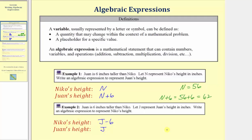As an example, let's let j, Juan's height, be equal to sixty inches, so j would be equal to sixty. Notice that j minus six, which represents Nico's height, would be sixty minus six, which equals fifty-four. And notice how Juan is six inches taller than Nico.